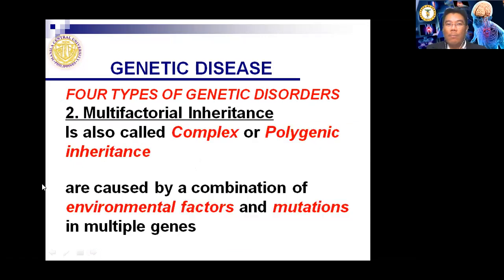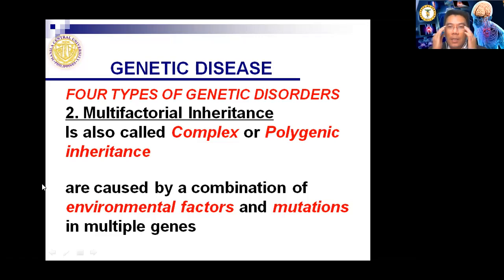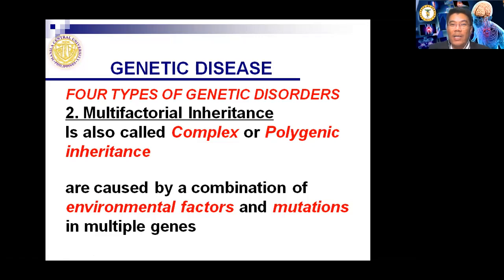Multifactorial inheritance is also called complex or polygenic inheritance. Unlike single gene inheritance, which is Mendelian and monogenetic, multifactorial inheritance involves a combination of problems with multiple genes and environmental factors. That is why it identifies as multifactorial inheritance. The key difference between single gene and multifactorial inheritance is that multifactorial adds environmental factors to genetic factors.